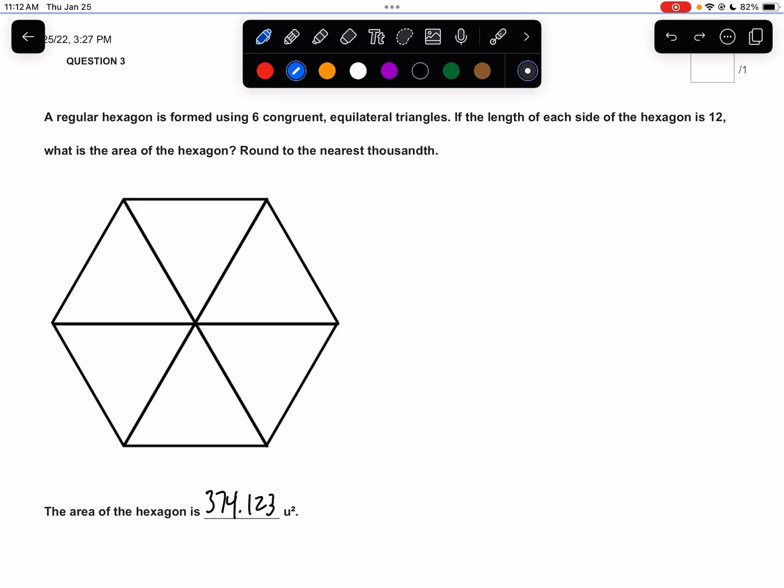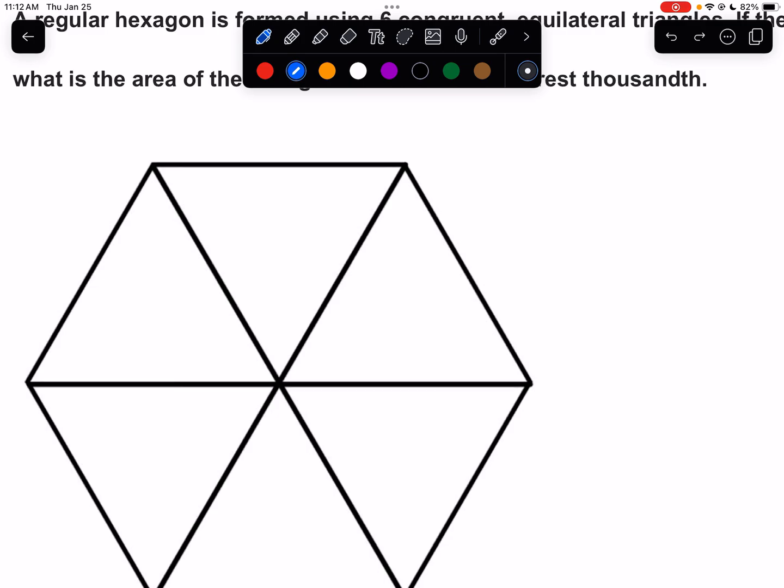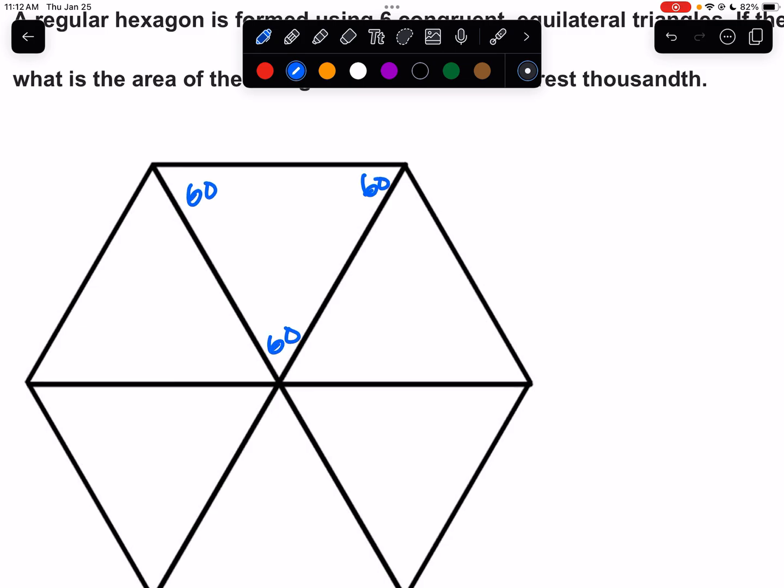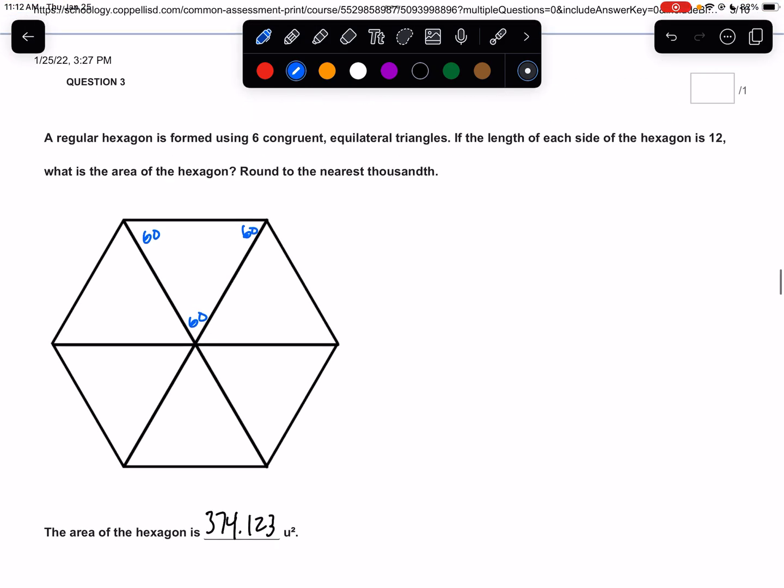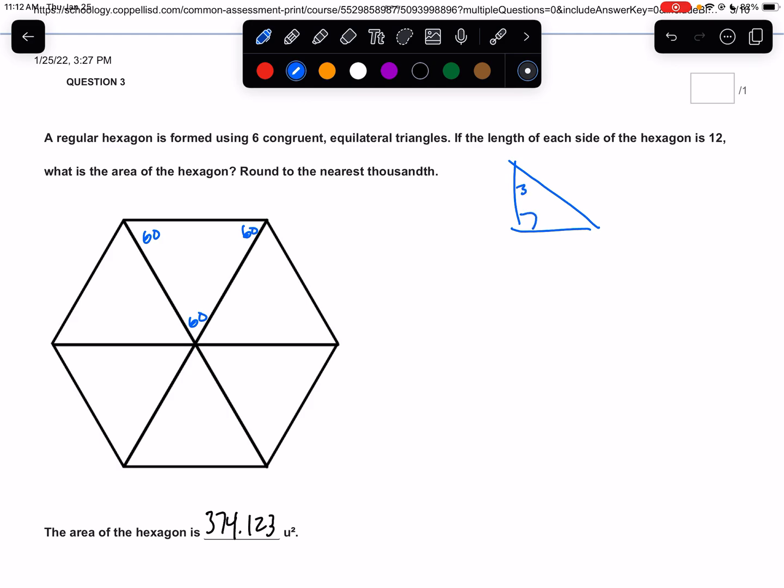A regular hexagon is formed using six congruent equilateral triangles. If these are equilateral triangles, we know all these angles are 60. I'm not going to fill out every angle, but they're all 60. We should be thinking about, when we have equilateral triangles, we should be thinking about cutting it to make a 30, 60, 90. If the length of each side of the hexagon is 12, that means all these sides all the way around is 12, what is the area of the hexagon? So there's a few ways you could do this, but basically, we need the area of this triangle.